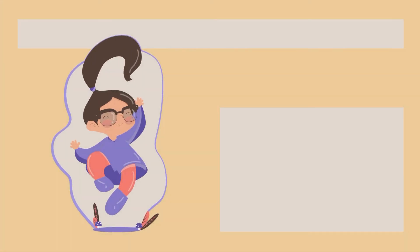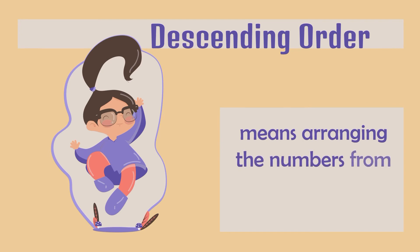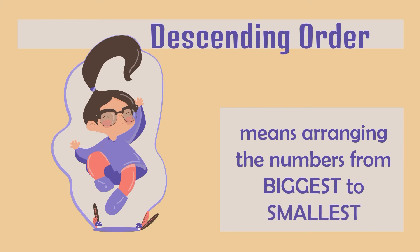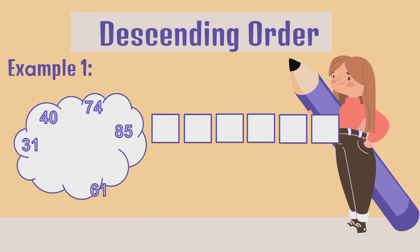Let's go to descending order. What is descending order? It means arranging the numbers from biggest to smallest. Let's see some examples. Example 1: We have 31, 40, 74, 85, 61, and 90.